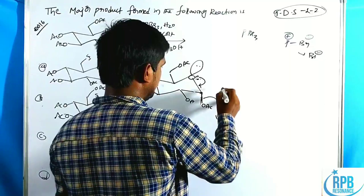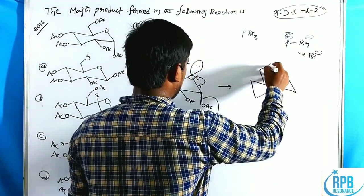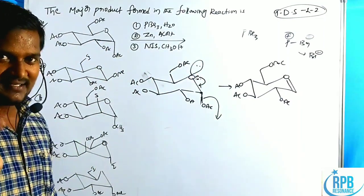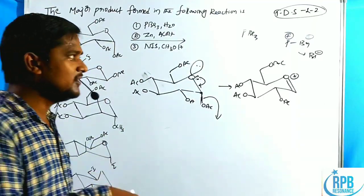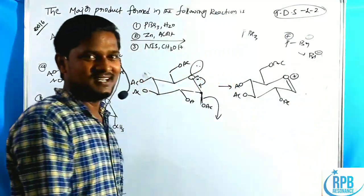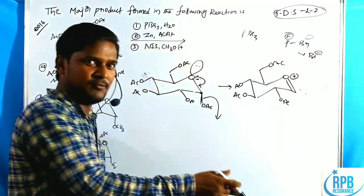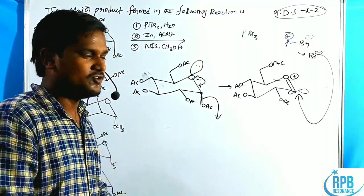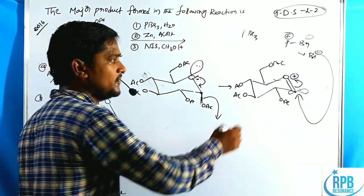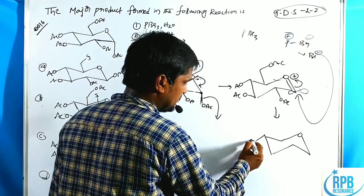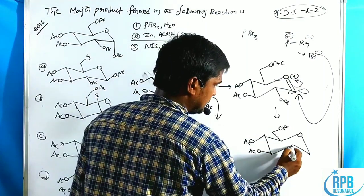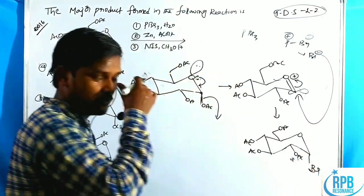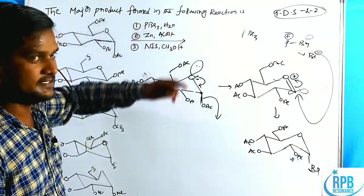The bromide ion attacks at the axial position, becoming neutral, giving the product with OAC groups retained and bromide now installed axially. This concludes the role of the first reagent PBr3.